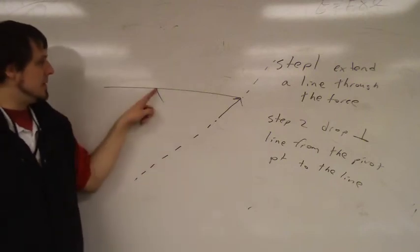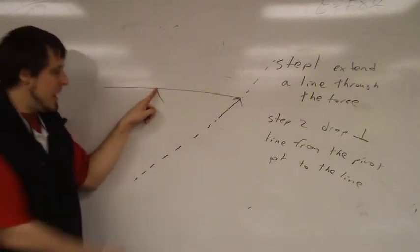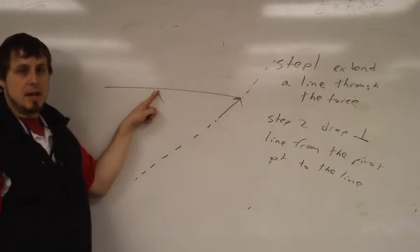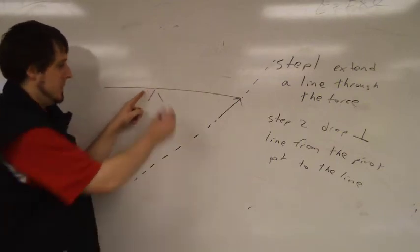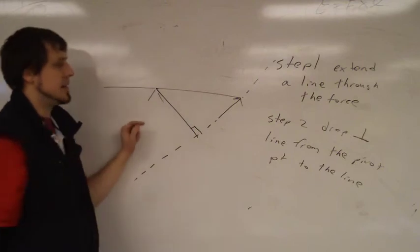Where is it able to pivot about? Right here. Okay. So, I'm going to drop a line that will meet up with this line that is perpendicular. Okay. So, what will that look like? Well, that should look something like this, where that is a 90 degree angle.